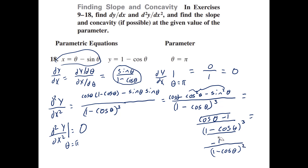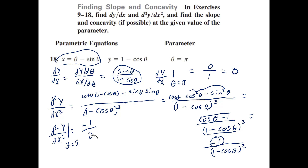This tells us the graph is always concave down. When we evaluate the second derivative at θ equals π, we get negative 1 in the numerator and 1 minus negative 1 equals 2 in the denominator, giving negative one-half.